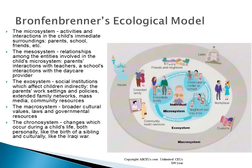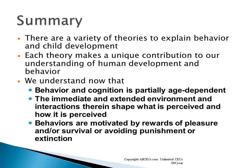Bronfenbrenner's ecological model illustrates how many different things interact to influence a child's development, including value systems and mental, physical, and cognitive health. In summary, there are a variety of theories to explain behavior and child development, and each theory makes a unique contribution to our understanding of human development. We now understand that behavior and cognition are partially age-dependent, and that the immediate and extended environment shapes what is perceived and how it is perceived. Behaviors are motivated by rewards of pleasure or survival, or by avoiding punishment.